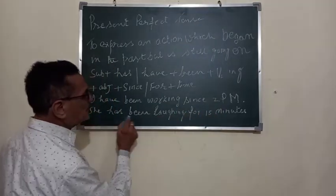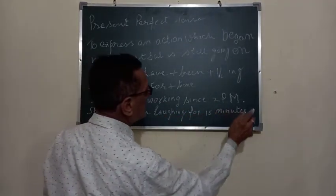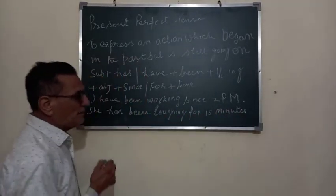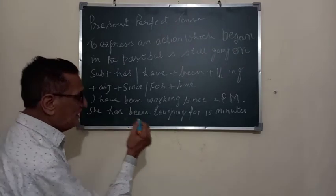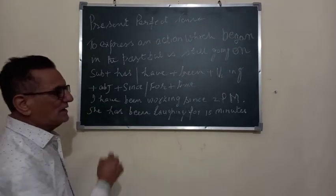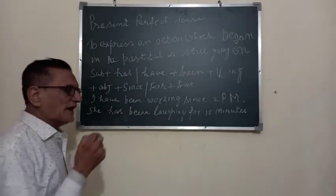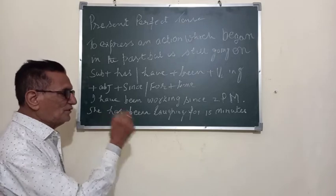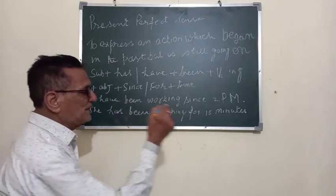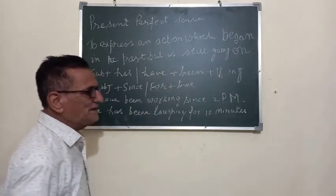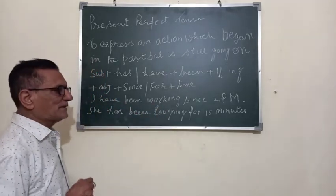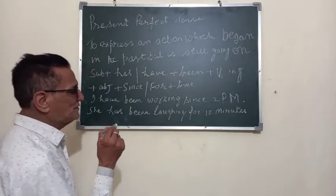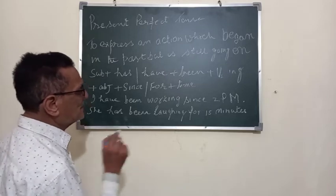She has been laughing for 15 minutes. You have been staying in this hotel for 10 days. I have been watching a movie since 3 p.m. Like these sentences are made — 'since' and 'for' are used in these sentences.